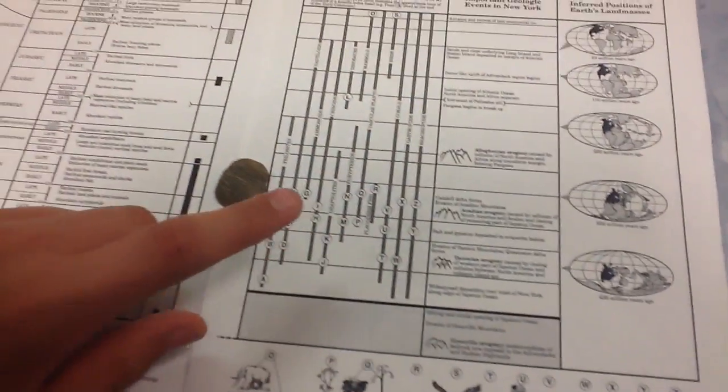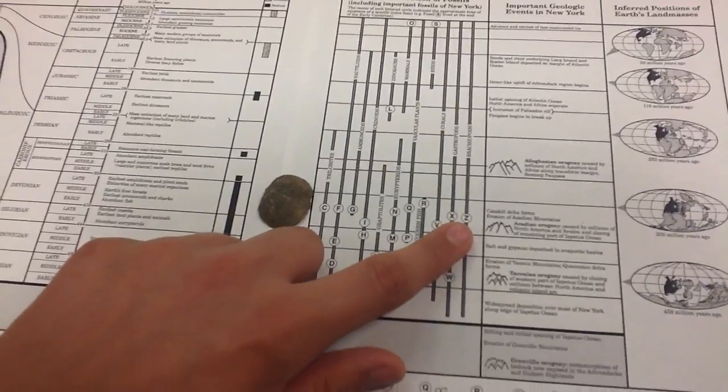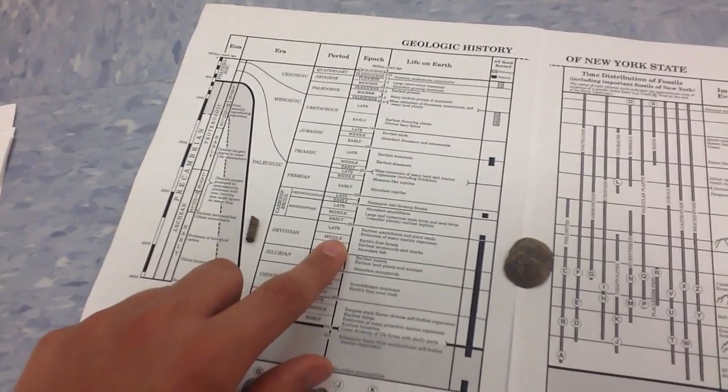Then go up to the time period chart and determine where your fossil is located. Notice that it's only in one location, making it an index fossil. Then go to your left and determine its time period. Ours was Middle Devonian.